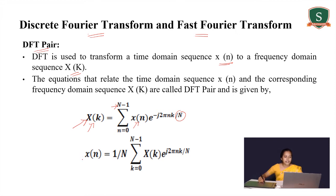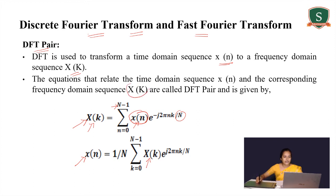You can recover the time sequence x(n) from the frequency domain value X(k) using the inverse DFT: x(n) = (1/N) Σ (k=0 to N−1) X(k) · e^(j2πnk/N). These are the two ways of transforming a time domain sequence x(n) into a frequency domain sequence X(k).